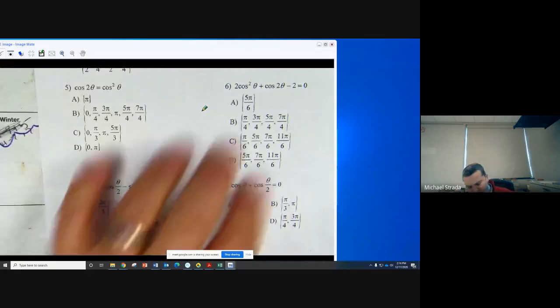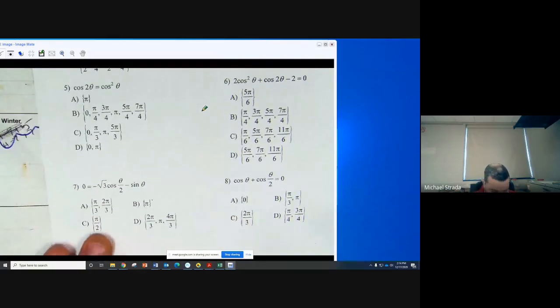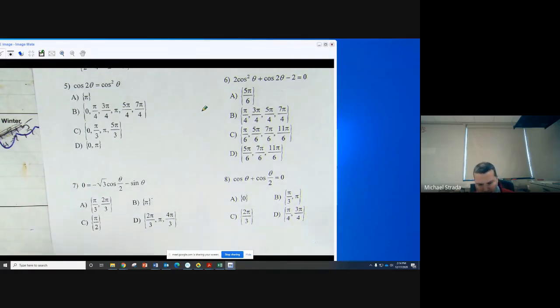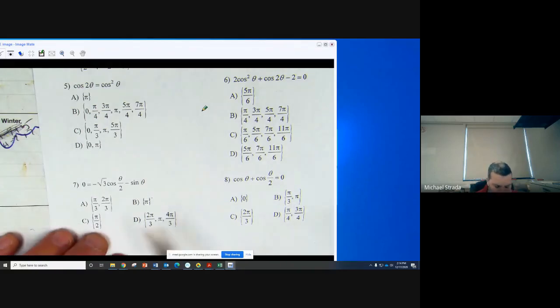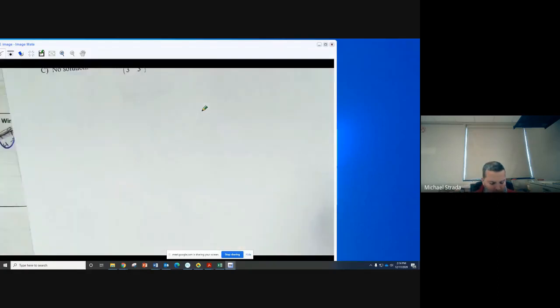Now when you start with seven, you're doing seven through twelve. A couple things: number one, you may have extraneous solutions when you do these. So when we take the quiz next week on Tuesday, you don't have to worry about extraneous solutions. However, in the multiple choice answers they do, so make sure your work matches up. We'll post the answers tomorrow and you'll see what I mean by that.